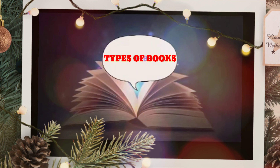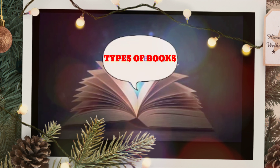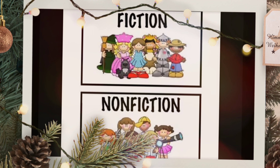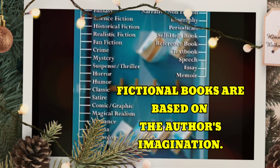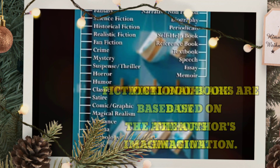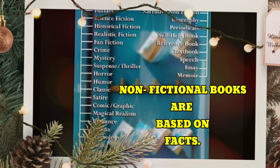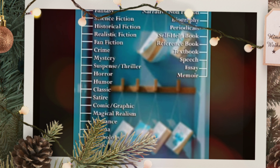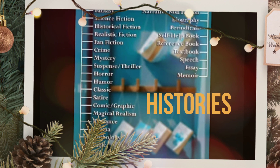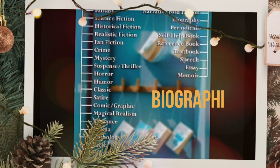Types of books: books are generally divided into two parts — fictional books and non-fictional books. Fictional books are based on the author's or writer's imagination, for example short stories, horror stories, fairy tales, etc. Non-fictional books are based on facts and reports of true events, like histories, biographies, and journals.